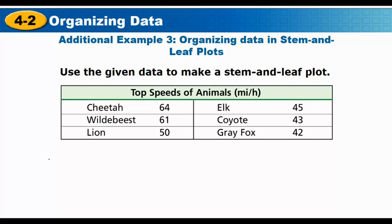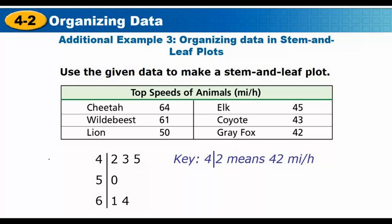Now let's make a stem-and-leaf plot from a table of the top speeds of animals. A cheetah goes 64 mph, a wildebeest 61 mph, and so on. The tens digits become our stems — we have numbers in the 40s, 50s, and 60s, so 4, 5, and 6 are our stems. For the 40s: 42, 43, 45. The lion is our only entry in the 50s at exactly 50, so the stem is 5 and the leaf is 0. Then 61 and 64 for the wildebeest and cheetah.